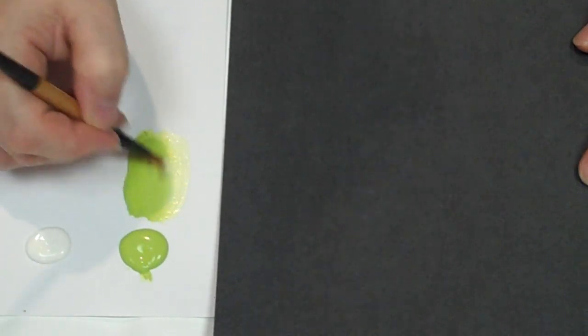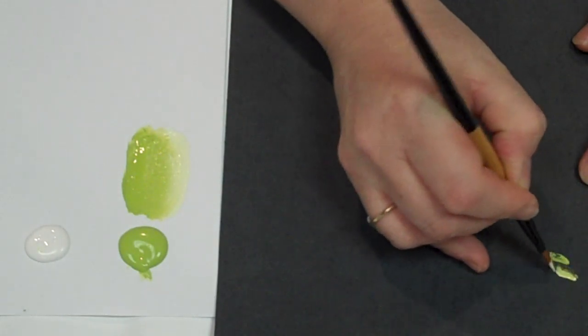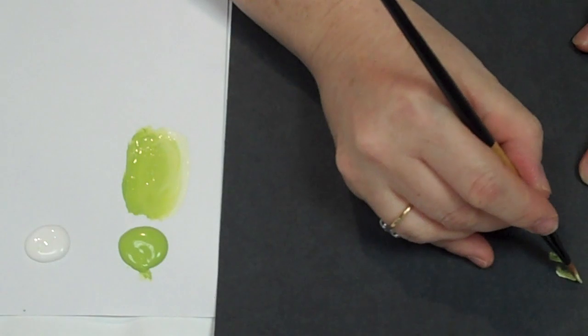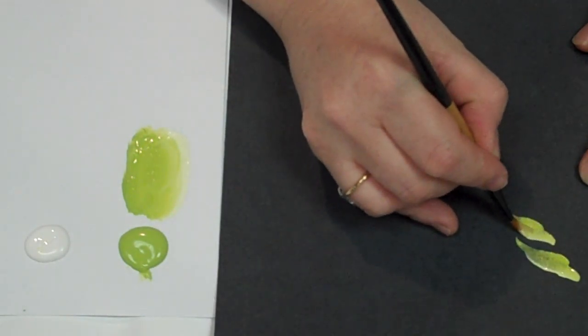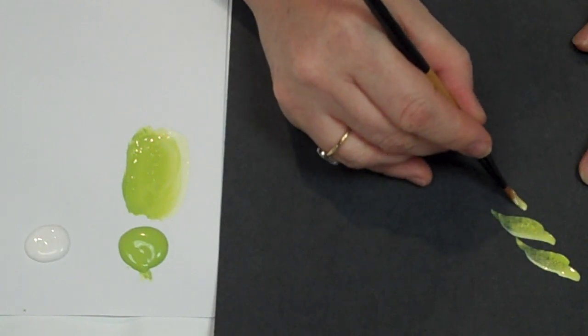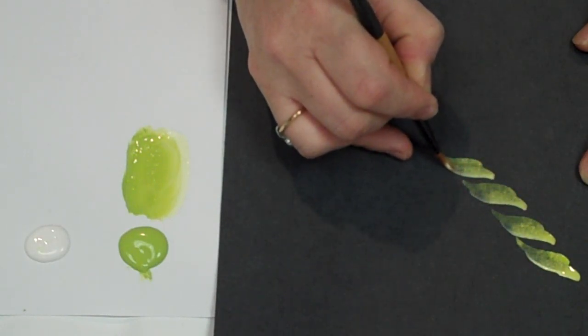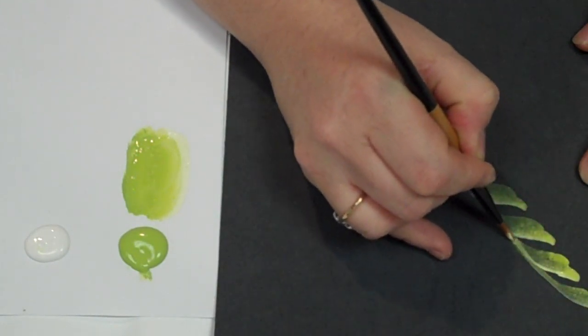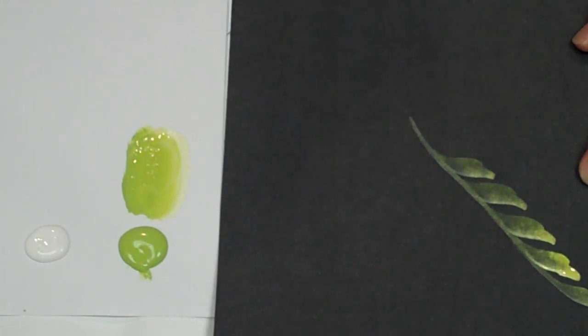We're going to do a simple little plume, a calligrapher's plume. So I'm going to press down, a little bit of water here, press down, up onto the point, press down onto the point. And then I shorten the stroke just a little bit, stand it on the chisel edge, and pull straight down to make a calligrapher's plume.